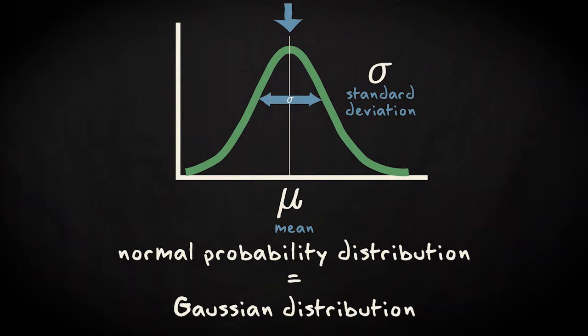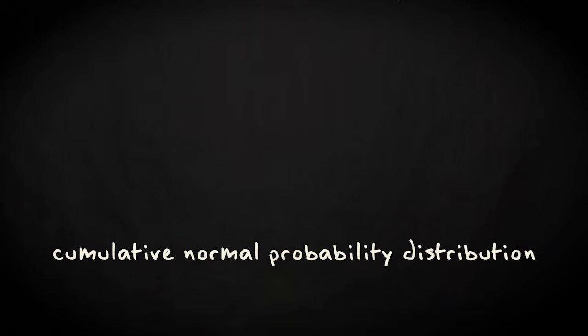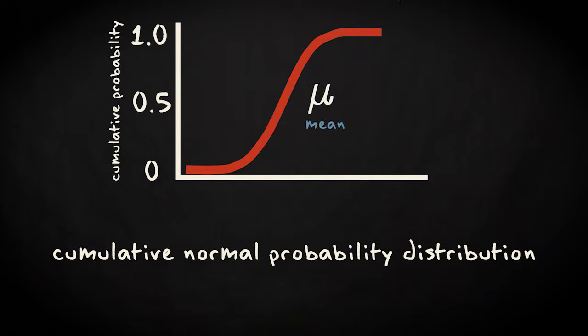Both mu and sigma are called parameters of the distribution. The cumulative normal probability distribution has a sigmoidal shape, where the mean is given at the probability value of 0.5 and the sigma determines the steepness of the curve.